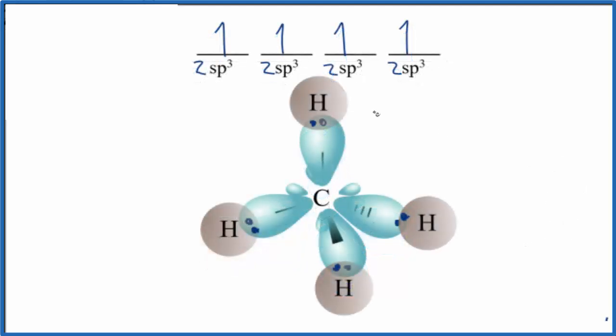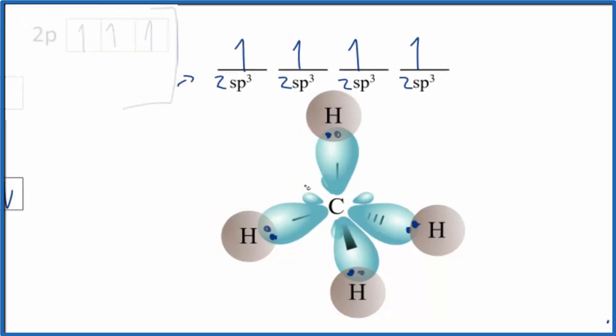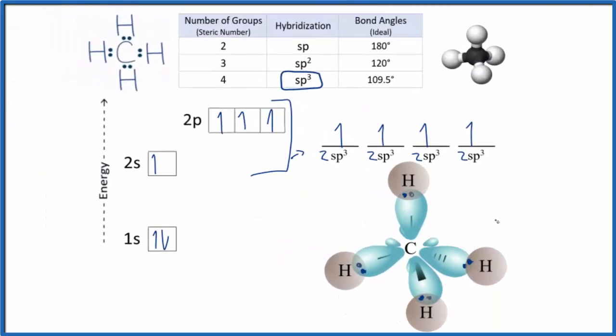Now we have the correct number of hydrogens, four hydrogens bonded to our central carbon in these sp3 hybridized orbitals. We have the correct molecular geometry, tetrahedral molecular geometry, and we have these bond angles of 109.5 degrees.